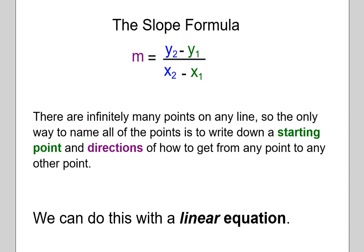So what can you do? You could come up with a formula or an equation that describes all of the ordered pairs as a relationship between the horizontal position and the vertical position. There are infinitely many points on any line, so the only way to name all of the points is to write down a starting point and directions of how to get from any point to another.